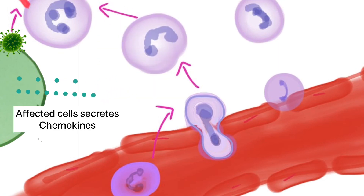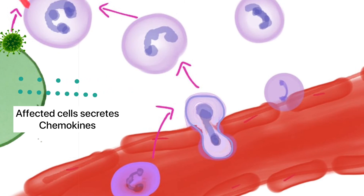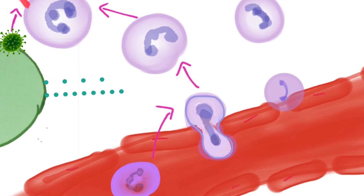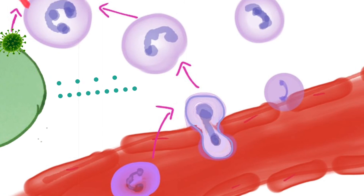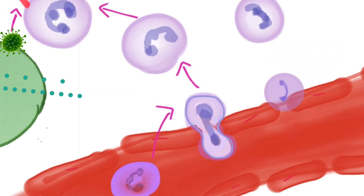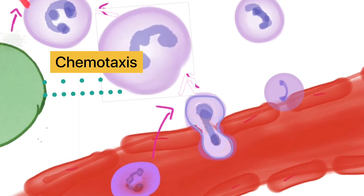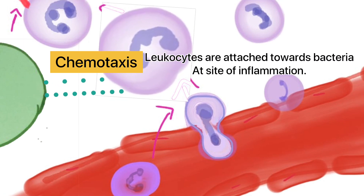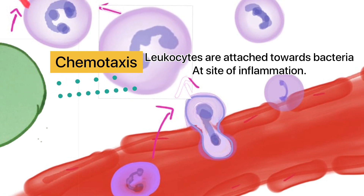When a pathogen-affected cell is attacked, it secretes chemical substances called chemokines. Chemokines include leukotrienes and cytokines. These chemokines attract neutrophils to the infected area. For example, when a pathogen is detected on a cell, it sends a signal via chemokines; WBCs detect this signal and move towards and kill the pathogen. This process is called chemotaxis — the process by which leucocytes are attracted towards bacteria at the site of inflammation.